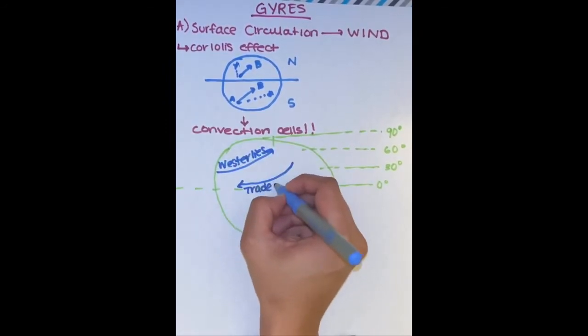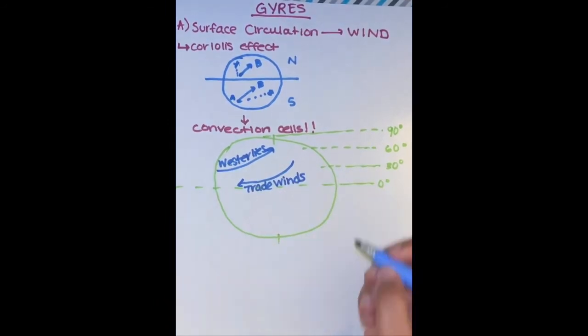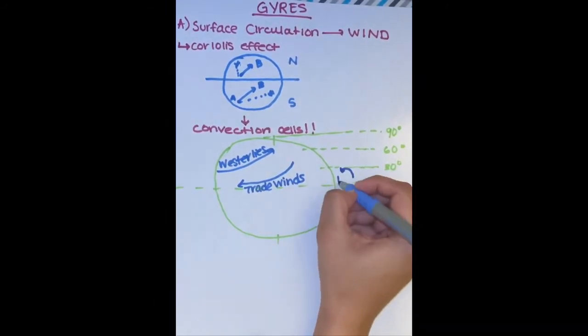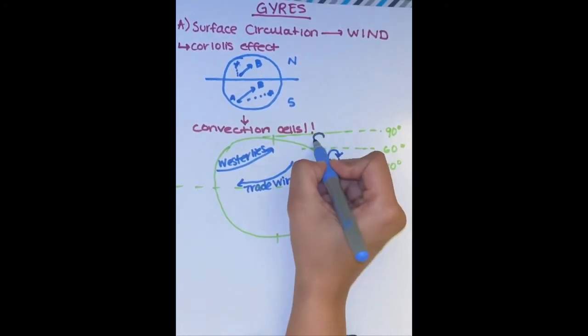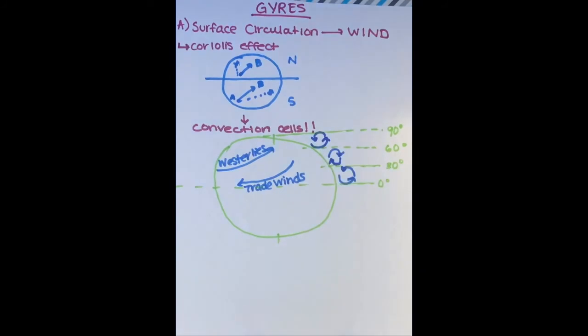At the equator, the air is warmer because of the direct heat from the sun. Here the warmer, lighter air rises and the cooler, denser air sinks, creating a cycle that is seen between the latitudes of 0 degrees, 30 degrees, 60 degrees, and at the poles.